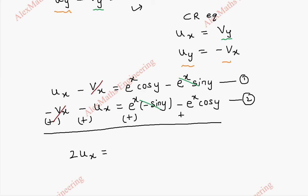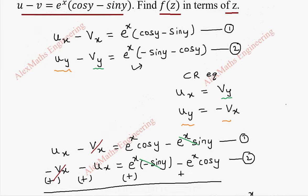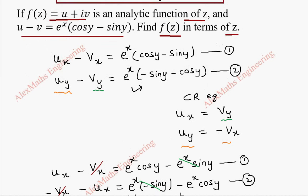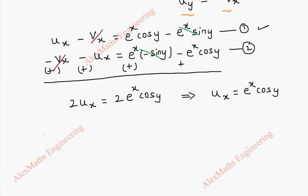Those two terms cancel and the other two get added, giving 2·e^x·cos y. Hence ux equals e^x·cos y. Now using ux, let's go back to the first equation and substitute.